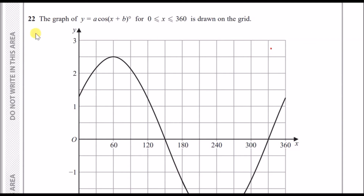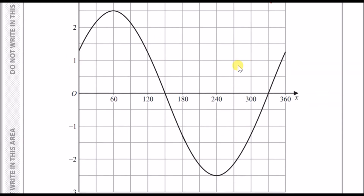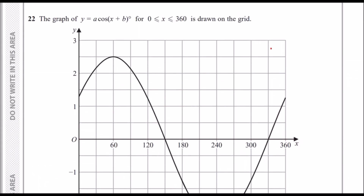Number 22. We've got the graph of y equals A cos(x + B) drawn on the grid. They want us to find the value of A and the value of B. Before figuring out what A and B represent, we need to be familiar with a cos graph.